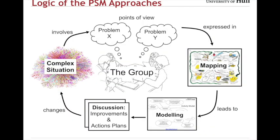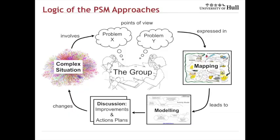All those ideas and assumptions come together in the logic of the problem structuring methods. We assume we start with a complex situation — and that's really important because assuming complexity makes us humble, recognising we can't fully understand these situations, giving us a more realistic expectation of what's possible. We assume we're working with a group of people who have different points of view and different ideas about the problem. We then express that in some form of a mapping method, which leads into more analytical and modelling methods that help us look forward and explore alternative ideas about what the future might be.